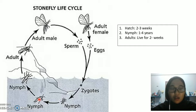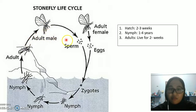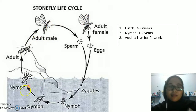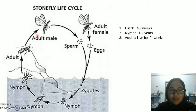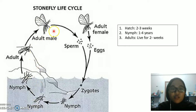Males tend to mature faster and emerge sooner than females. Emerging occurs mostly at night. Upon emerging from the water, the stonefly has one last instar. Upon its completion, the nymph is now an adult. The adult stage tends to last only a few days up to a few weeks.